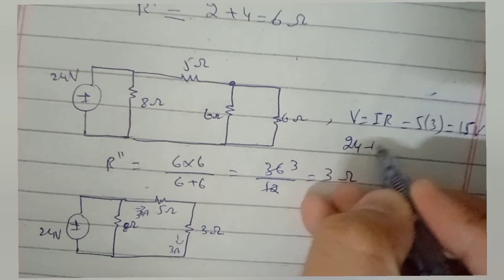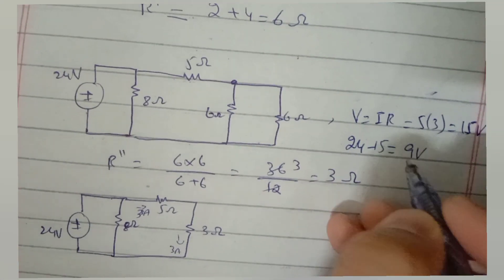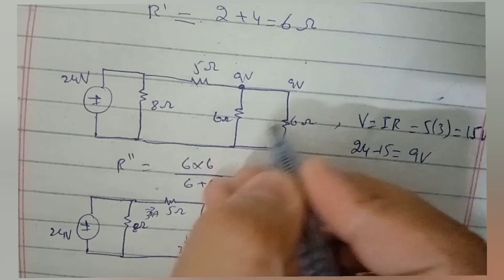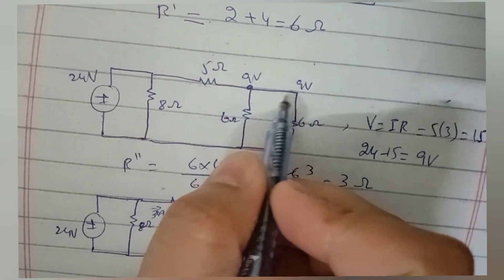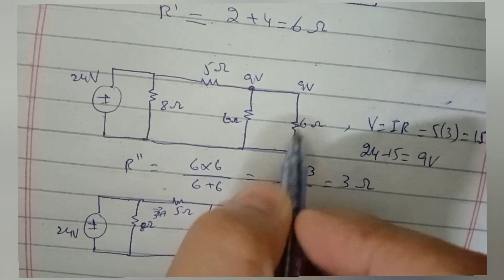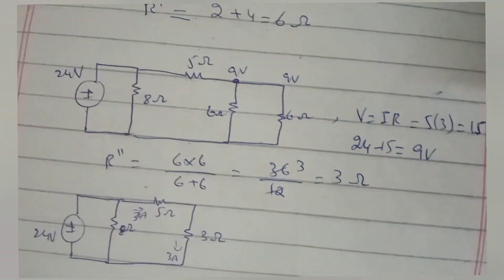Anyhow, we don't need it. We need to find current. As here again two same value resistors are connected in parallel, the 3 amperes which is coming from behind will be equally distributed among two branches.